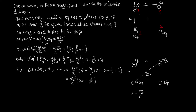For the second part, we need to find how much energy is required to place a charge of minus q at the middle of the square. The diagonal of the square is √2·a, so the distance from each corner to the midpoint is √2·a / 2 = a/√2. Each of the four charges is therefore the same distance a/√2 from the center. We use U = qV, where q is minus q and V is the total voltage at the center.